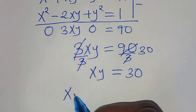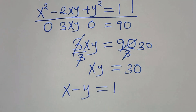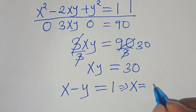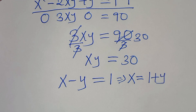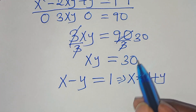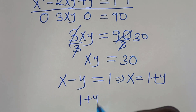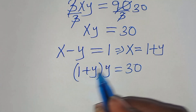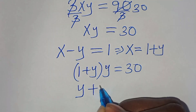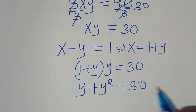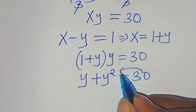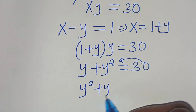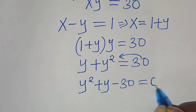Given that x minus y equals 1, we can make x the subject of the formula: x equals 1 plus y. Substituting into xy equals 30, we have (1 plus y) times y equals 30, which gives y plus y squared equals 30. Taking 30 to the left-hand side, we have y squared plus y minus 30 equals 0.